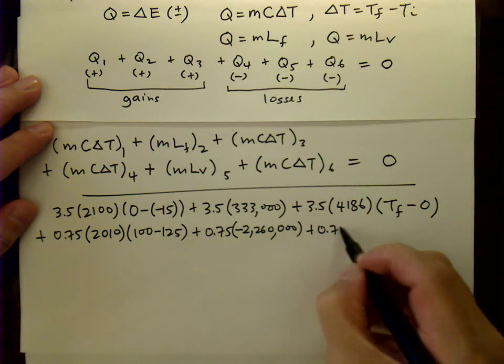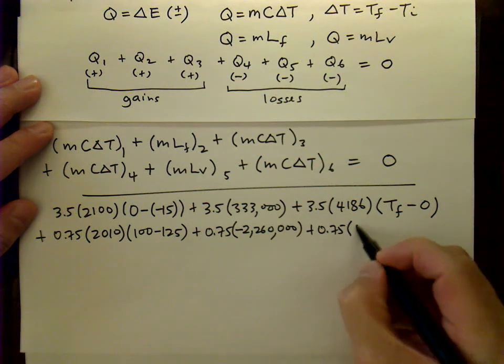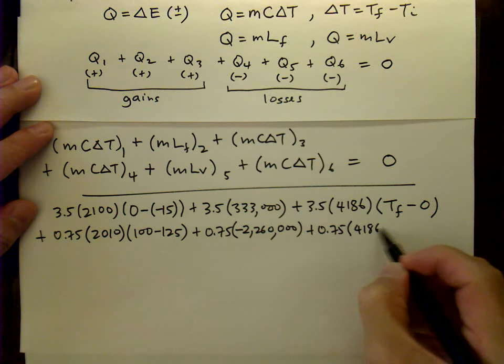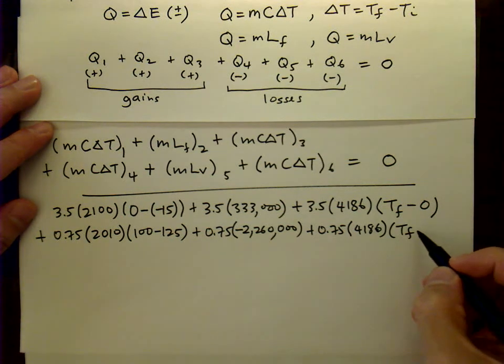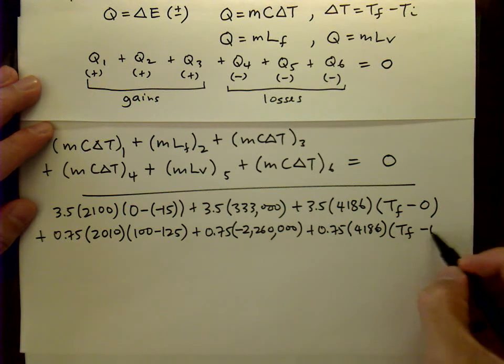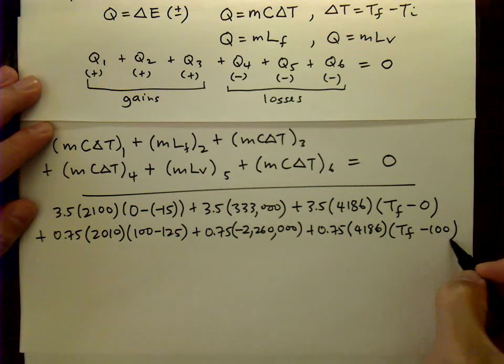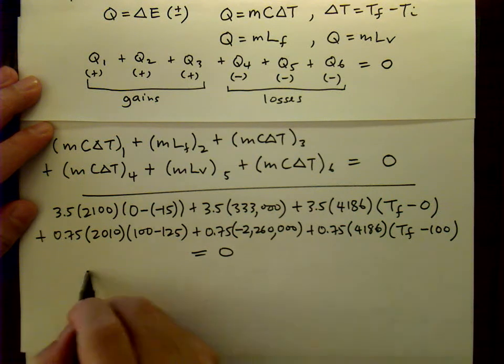And finally, we have the MC delta T term for the steam that is now water. The final temperature, which is unknown, T subscript f, minus the initial temperature, in this case 100. And all of this must be equal to zero.